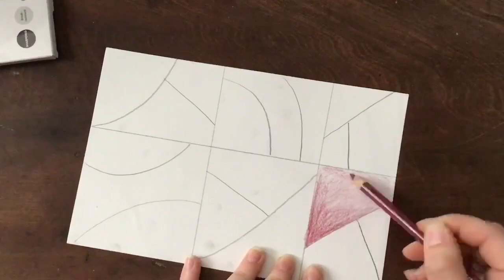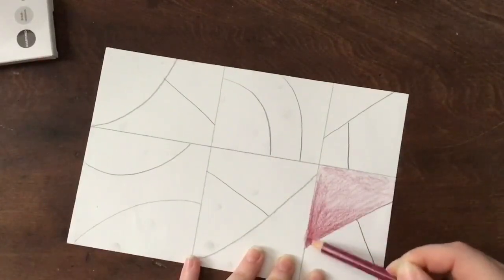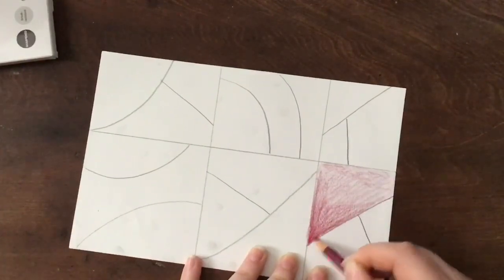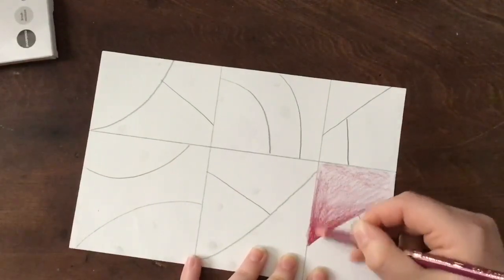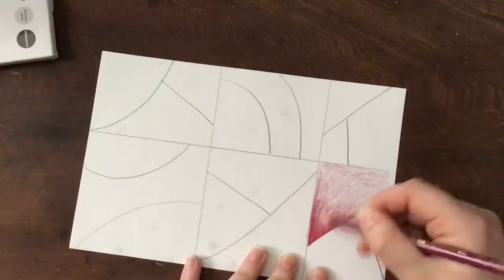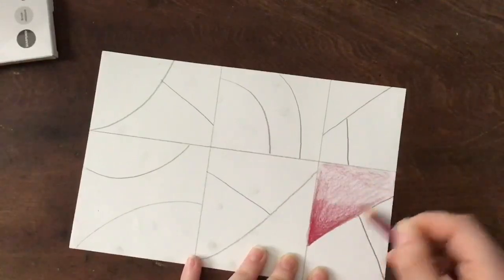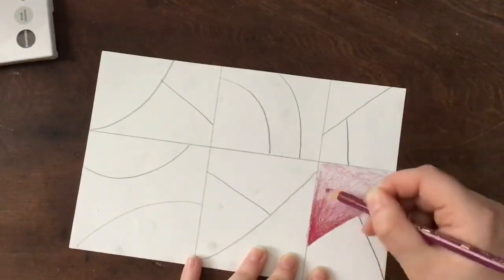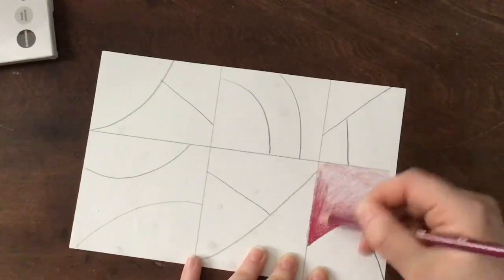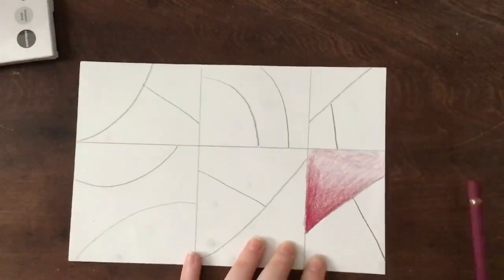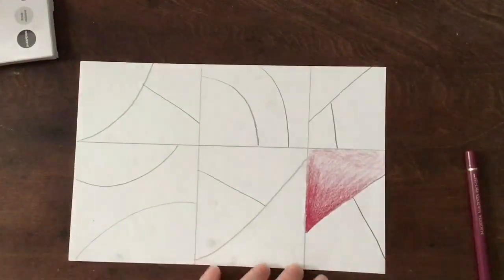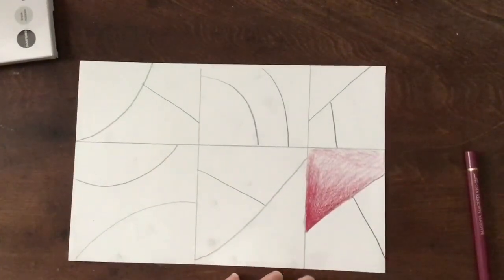You can see that it's really dark in that corner, and the darker that corner is, the better, because you want to have a lot of contrast, so a big range of tones from dark to light. As I move away from the corner, I lessen my pressure so that it blends easily. Alright, my first shape is done.